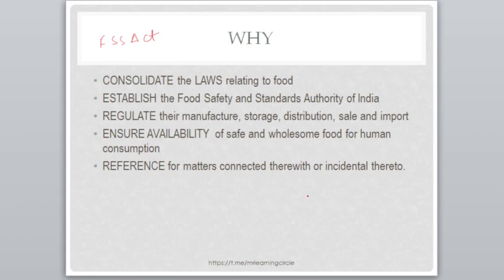Consolidate means to combine. For example, for a particular food item, there were so many laws — 1, 2, 3, 4, 5, 6 — so many laws. A person gets confused which law he or she has to refer. This led to ultimate confusion and no result at the end. The person ended up without any result and was always in a problem. Even the manufacturers and sellers were all in problem.